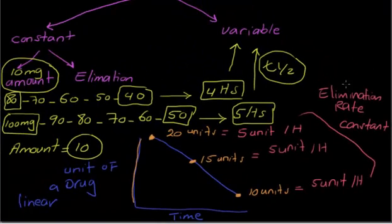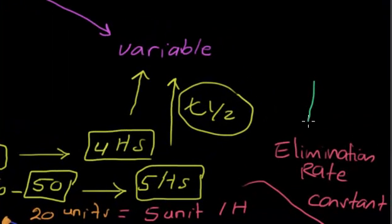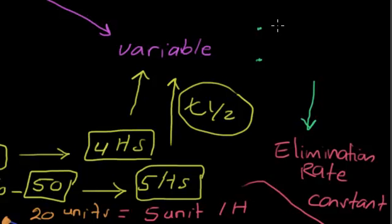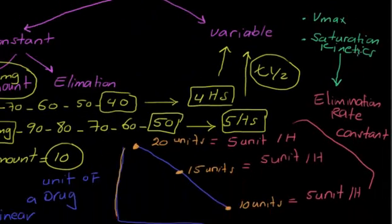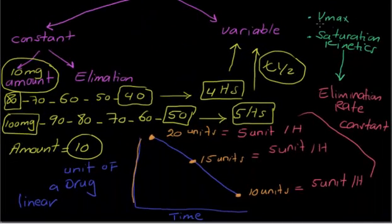Why is the elimination rate constant in zero order kinetics? In zero order kinetics, the drug works at a level called V-max, meaning all the receptors are saturated and all the enzymes are saturated. Because of this saturation, the elimination rate cannot change. We call this saturation kinetics. When you see the term 'saturation kinetics,' that means zero order kinetics; when you see 'V-max,' that also means zero order kinetics.